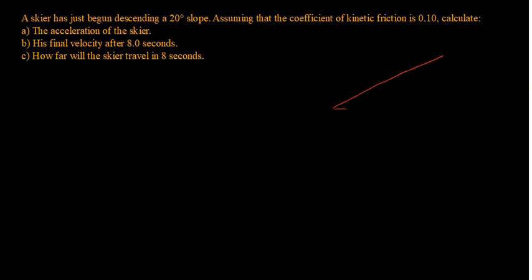Hello again with another video related to forces acting on an object moving on an incline surface. A skier has just begun descending a 20-degree slope. Assuming that the coefficient of kinetic friction is 0.1, calculate the acceleration of the skier, his final velocity after eight seconds, and how far the skier will travel in eight seconds. We'll start with a little sketch showing the incline.